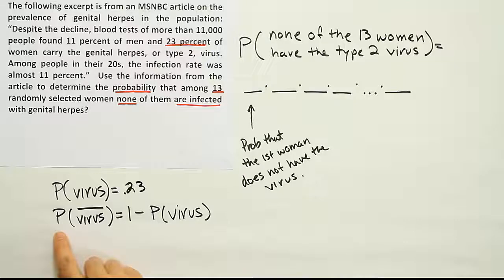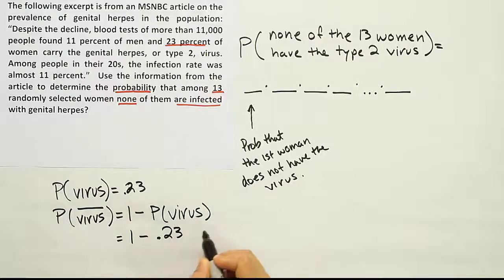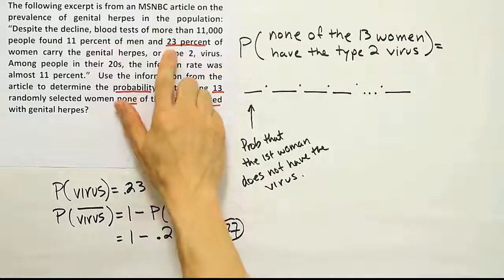So whatever you have here, probability of not A is always equal to 1 minus the probability of A. Probability of not having the virus is 1 minus the probability of a subject having the virus. So this should indicate to us that the answer then is 1 minus 0.23, and that will work out to be 0.77.